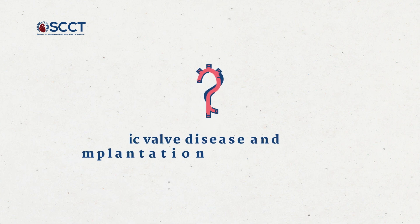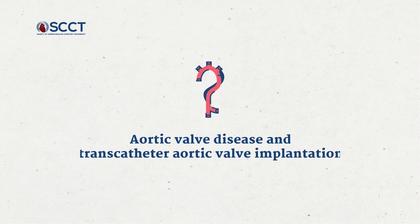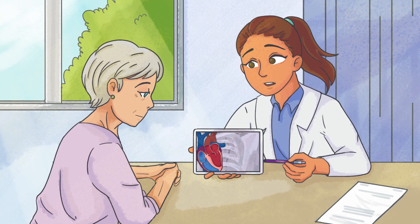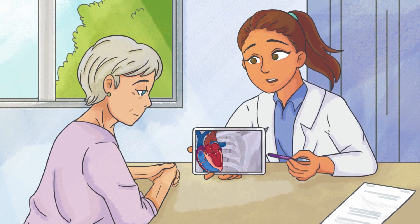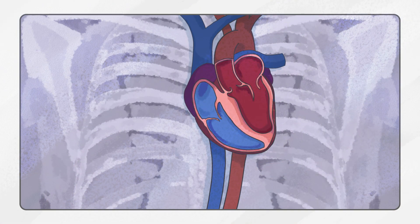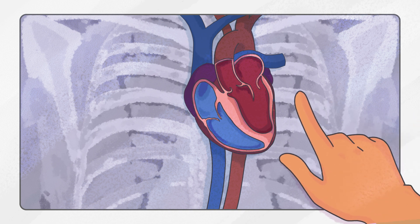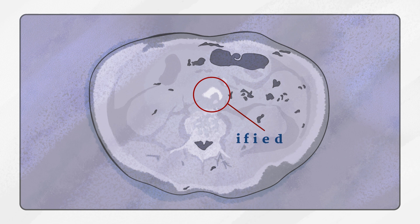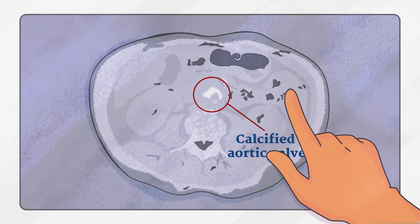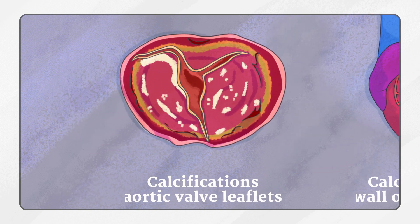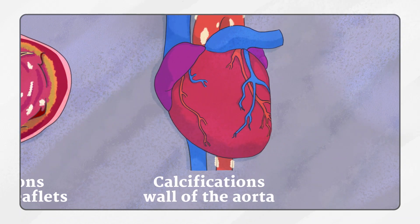Cardiac CT is now routinely used to assess patients with aortic valve disease, particularly prior to transcatheter aortic valve implantation. This is a dedicated CT showing calcifications in the aortic valve and the left ventricular outflow tract. However, regular chest CTs also give you a good view of aortic valve calcification. Here is a regular chest CT and you can see a very calcified aortic valve. By going in the coronal plane you can make sure that these calcifications are on the aortic valve leaflets and not in the wall of the aorta.